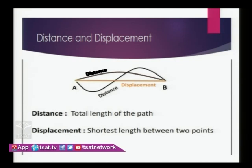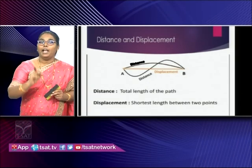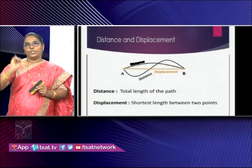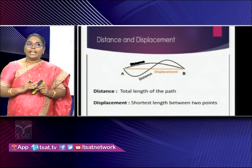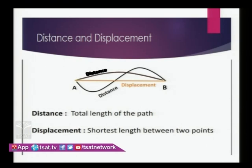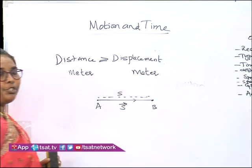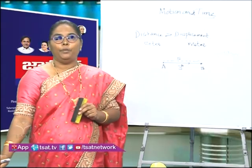There are three paths to move from A to B — one is a straight line path and two are curved paths. The straight line path is the shortest one, so we call it displacement. The lengths of the curved paths we call distance. The SI unit of both distance and displacement is meter.